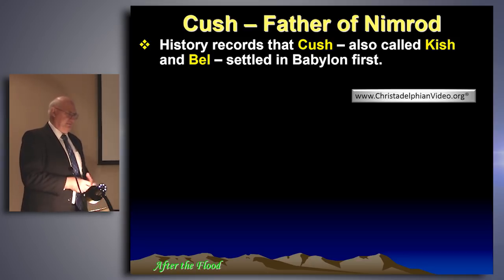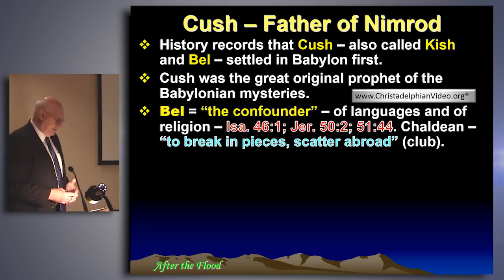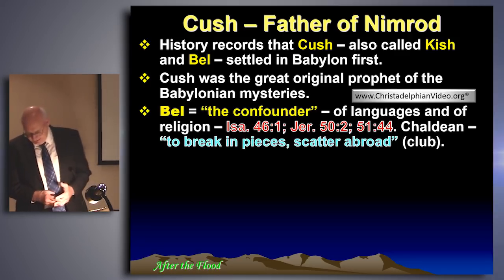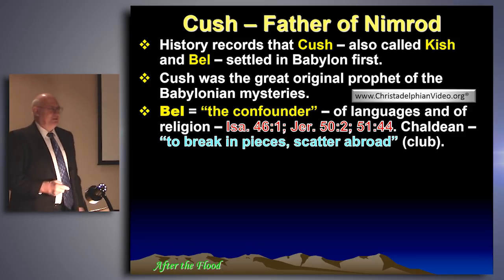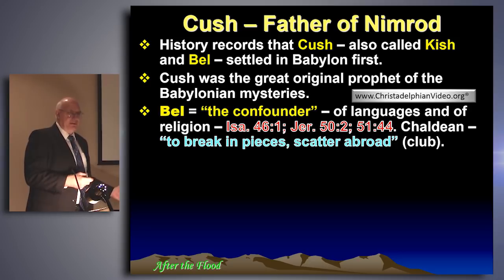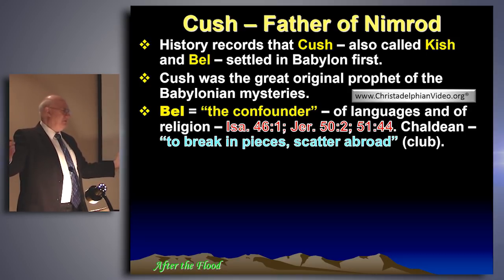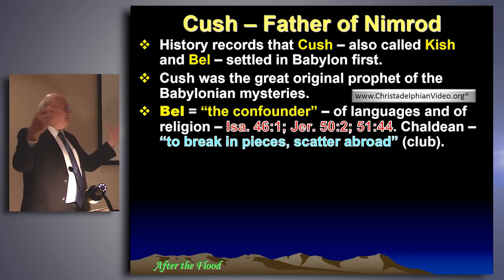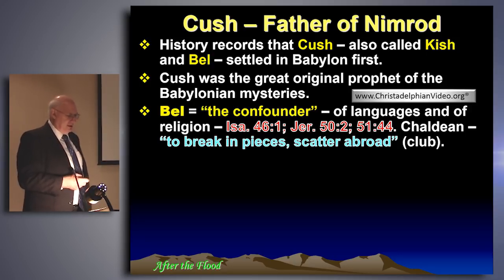Bel means 'the confounder,' and the symbol for Bel was a club — you bash something and break it into a thousand pieces. That's exactly where the mind of Cush led. The mind of Cush was taken up by his son Nimrod, and Nimrod's rebellion brought about the scattering of the nations from one language into seventy. In Chaldean, his name means 'to break in pieces or to scatter abroad.' You will find Bel referred to in Isaiah 46:1, Jeremiah 50:2 and 51:44.